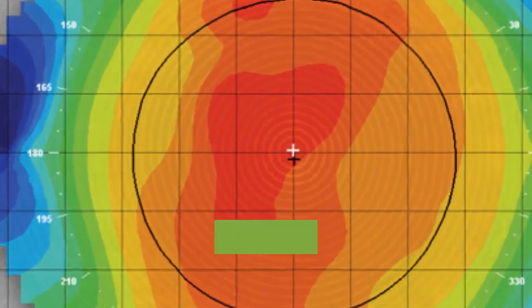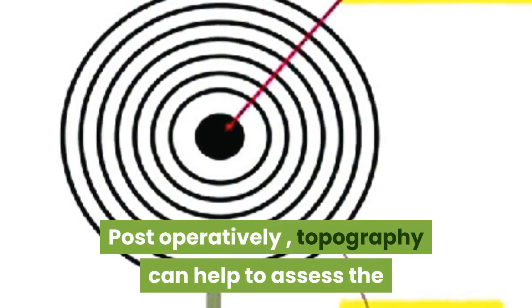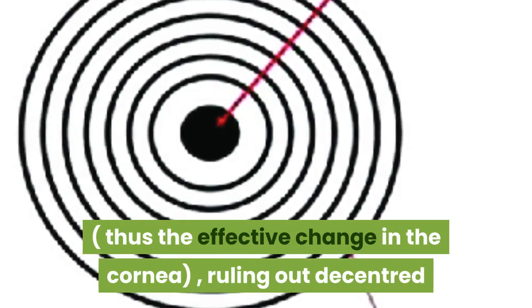Post-operatively, topography can help to assess the dioptric change created at the corneal level, thus the effective change in the cornea, ruling out decentered or incomplete ablation, post-excimer ectasia, or other changes.